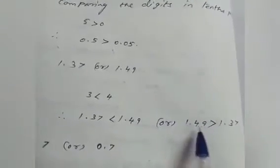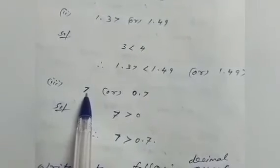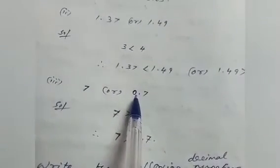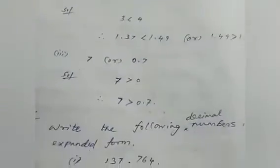The next example: which one is greater, 7 or 0.7? Here 7 has no decimal part, but 0.7 does. First we compare the whole number part: here it is 7, and here it is 0. Since 7 is greater than 0, therefore 7 is greater than 0.7.